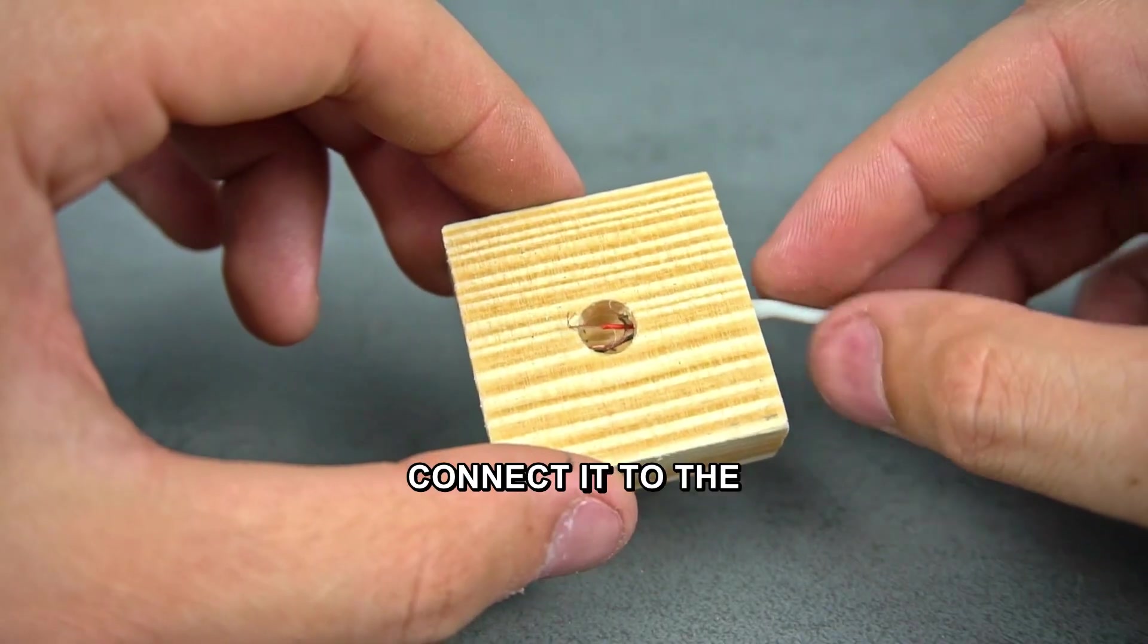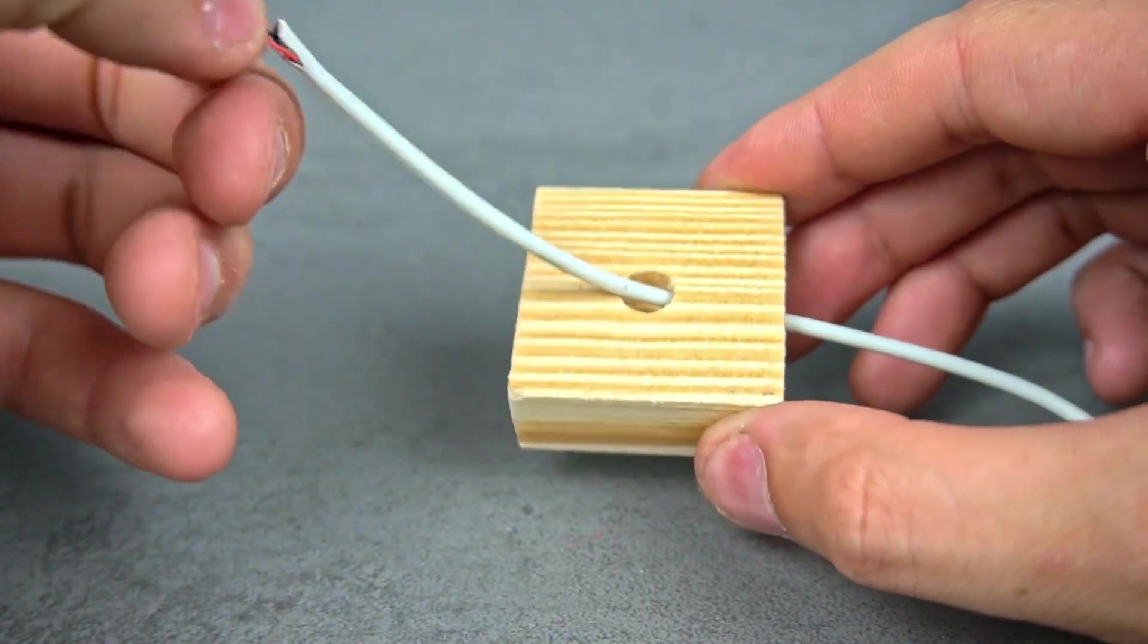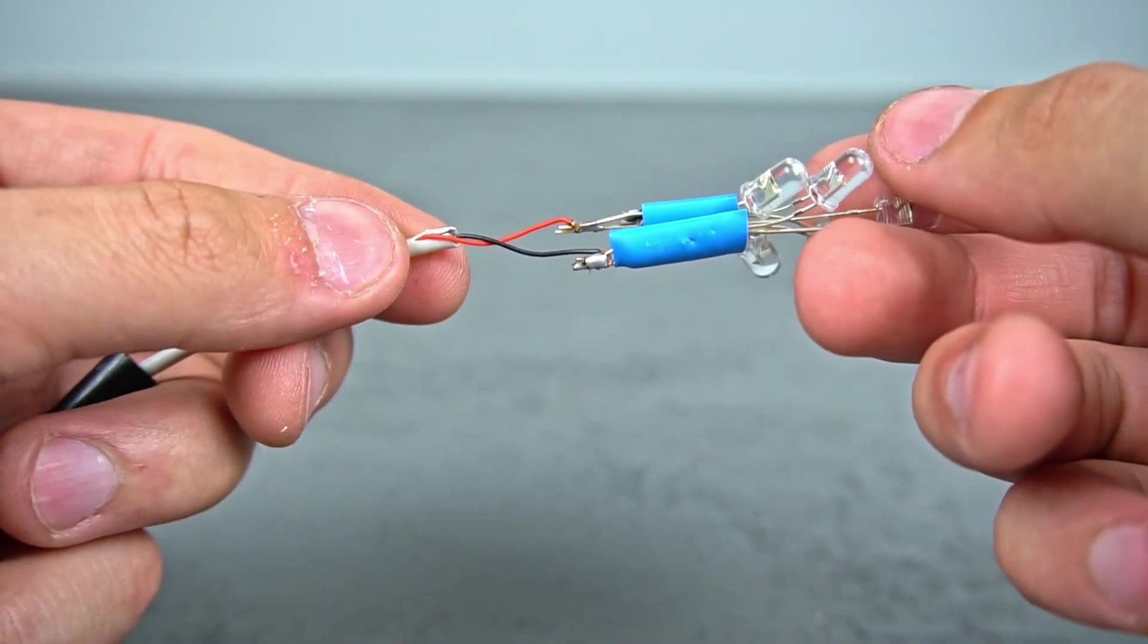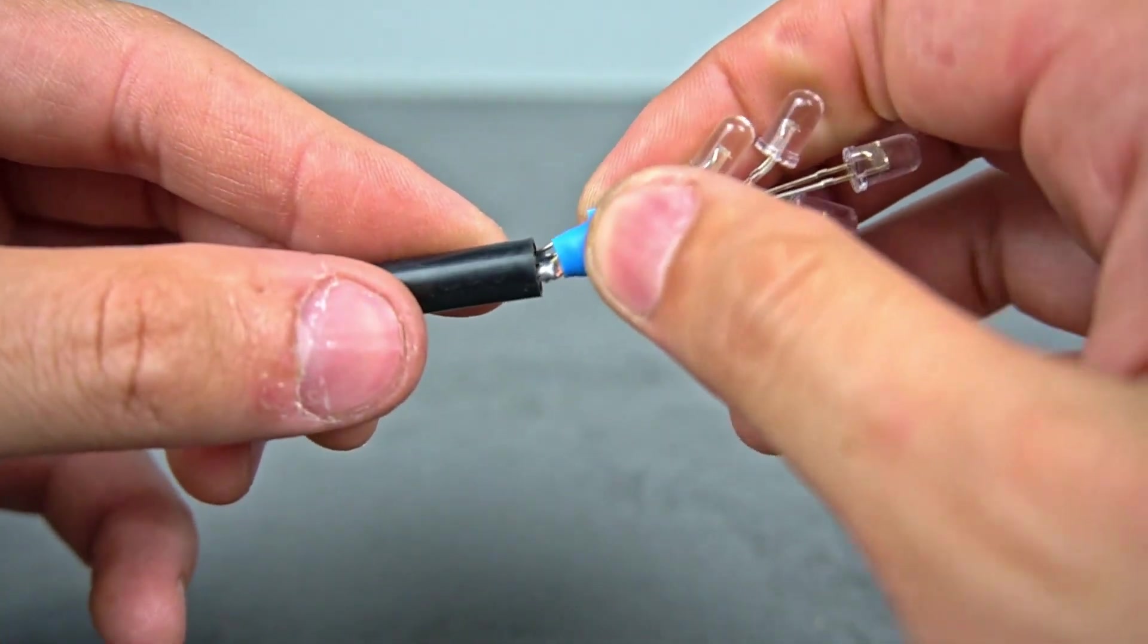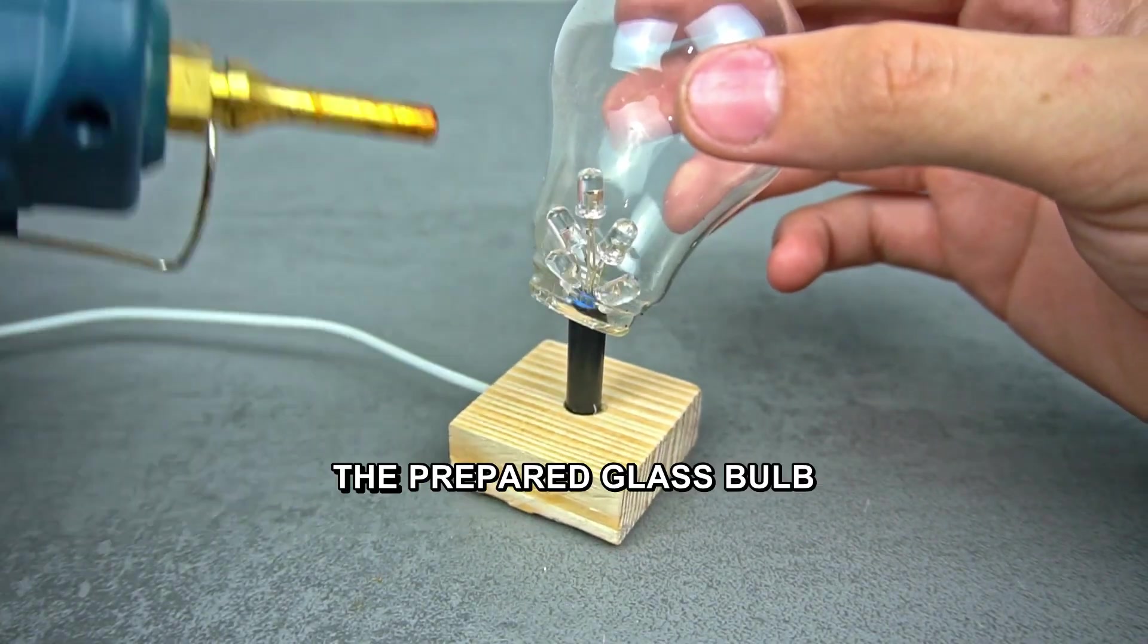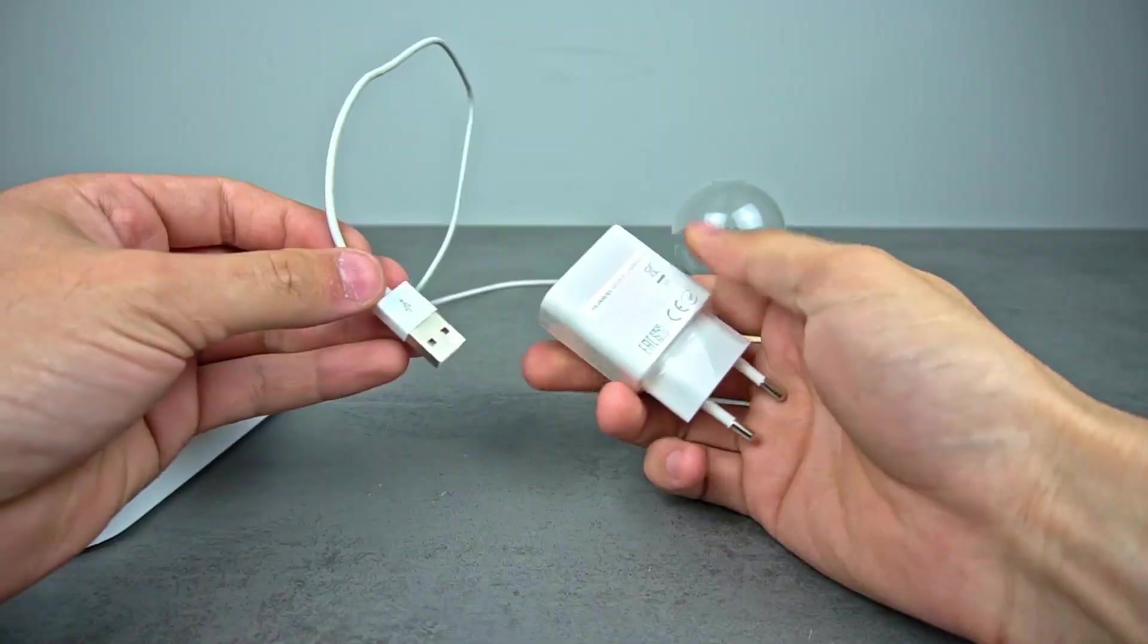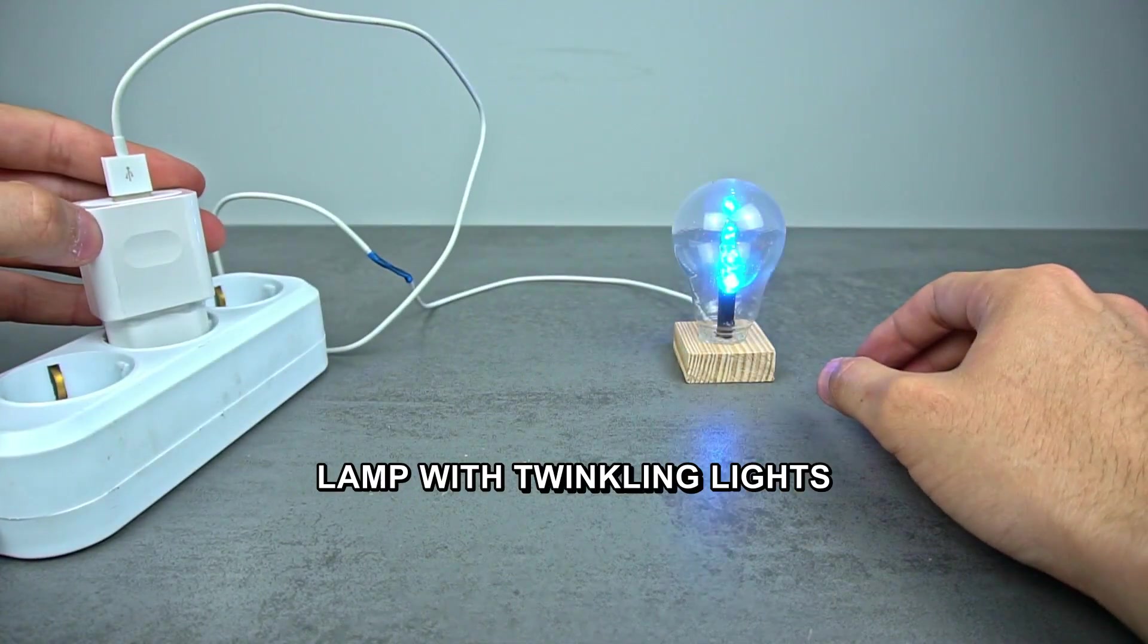Run the wire through the tube and connect it to the LED construction. Cover the LED composition with the prepared glass bulb. Connect the device to the USB port of the charger. You've created an original holiday lamp with twinkling lights.